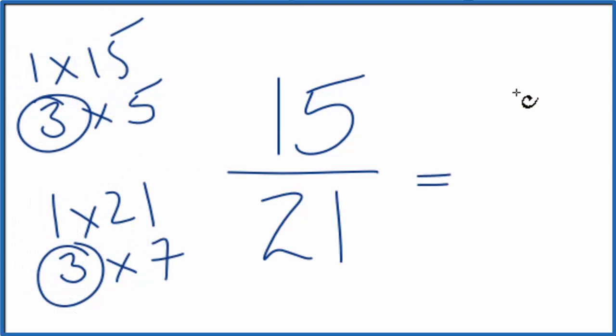So we have 5 over... 21 divided by 3 gives us 7. So we end up simplifying the fraction 15/21 down to 5/7.